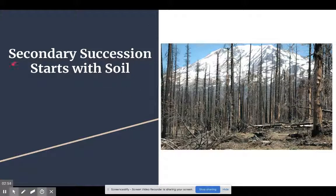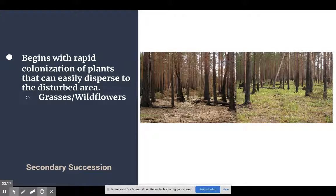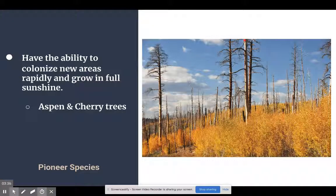Secondary succession is when we're starting with soil. Just think: secondary starts with S, soil starts with S. We don't need those lichens and algae to come in and create soil — we're already starting with a basis. A good example is a forest fire. A forest fire can wipe out an entire area, but the soil is not gone; it might be disturbed, but it's still there. The first things to move in are grasses and wildflowers — they take advantage of the open canopy, light hits the floor, and they thrive. As the soil develops, we start to see smaller trees like aspen and cherry trees. It's important to note that these grow in full sunshine.